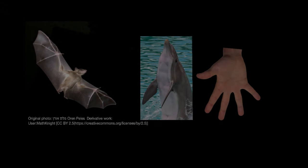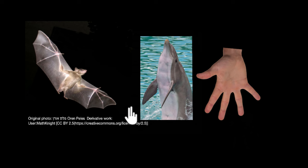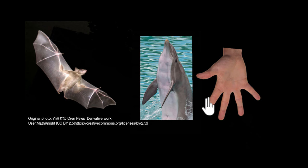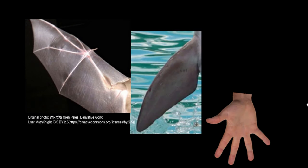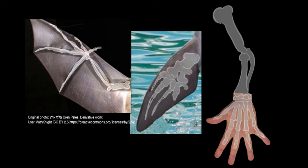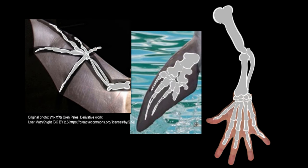So if you take a look at the wings of a bat, the flippers of a dolphin, and our hands, although they look very different and they perform different functions, if you look carefully at their bone structures, you'll find the bone structures are very similar. Let me zoom in to the wings and the flippers and the hand, and here are the bones. Look at them — do you see similarities?